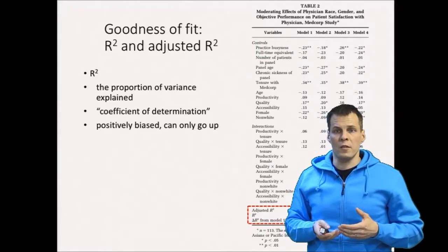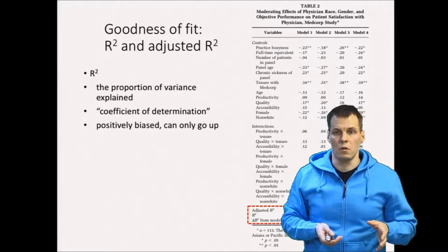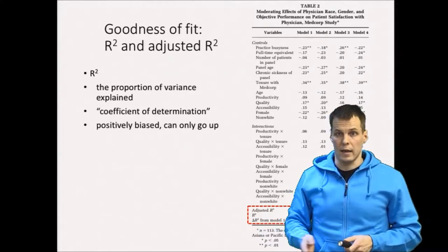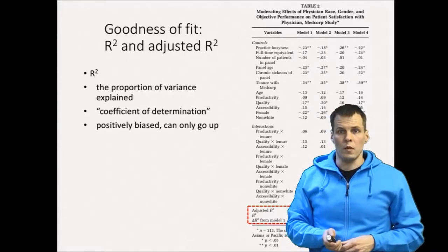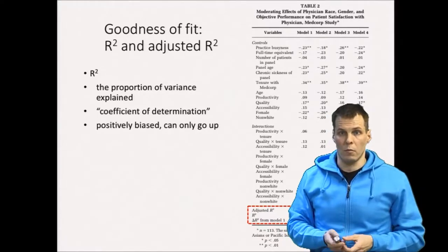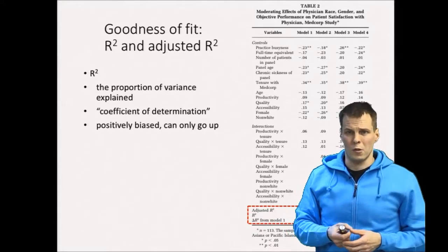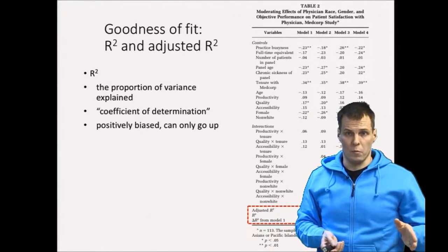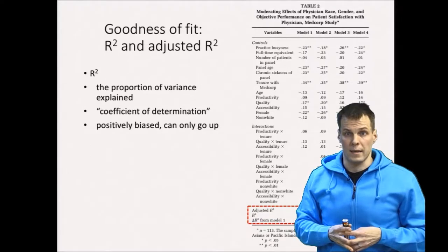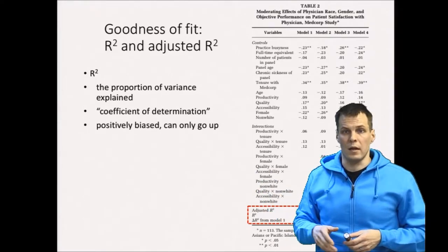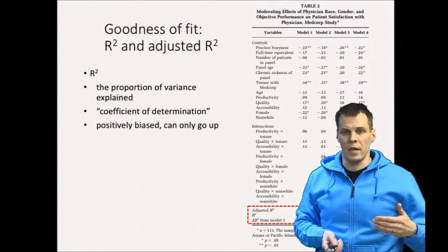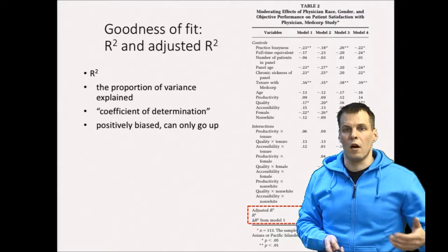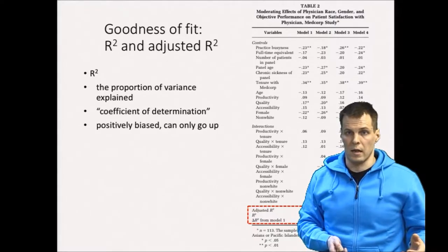The R-square varies between zero and one. Zero means the independent variables don't explain the dependent variable at all; one means they completely explain it. One problem with R-square is that it always increases when you add variables to the model. For example, if you fit a model with 99 variables to 100 observations, the R-square will be exactly one — so it is positively biased.